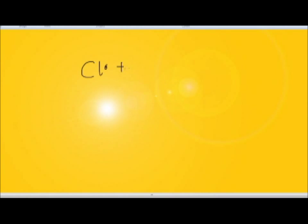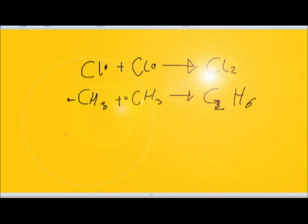An example of a few compounds that can be produced in the termination of this reaction: two chlorine radicals can form diatomic chlorine, two methyl radicals can form ethane, and a methyl radical can react with a chlorine radical to produce chloromethane.